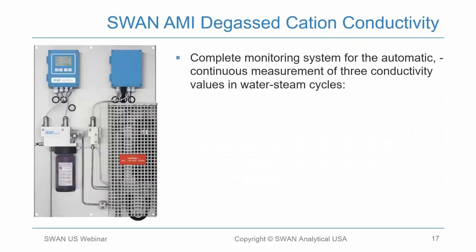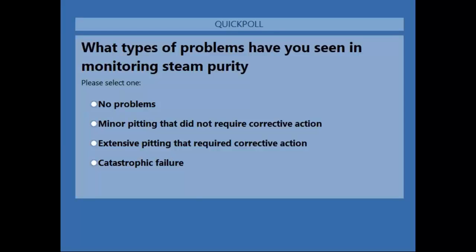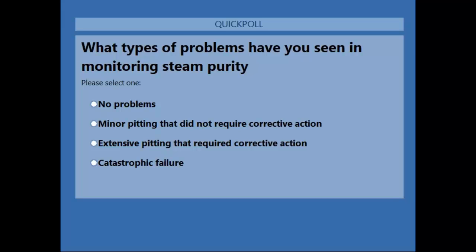Before moving on to the next portion of the presentation, where we talk specifically about SWAN's solution to measuring degas conductivity, we wanted to run a quick poll. Randy showed some images earlier about the kinds of problems that can result from issues with steam purity, and we want to get a feel for what the audience has experienced — what types of problems have you seen in monitoring your steam purity? Go ahead and click on whichever option reflects the level of problems you have seen.